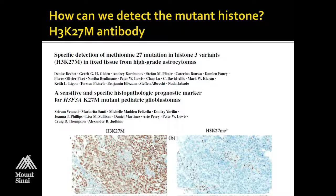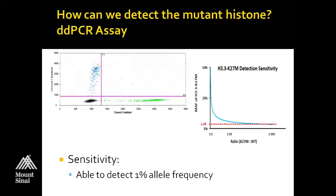There's a very nice antibody now available to the K27M. It does have potential caveats in terms of interpretation, but overall the antibody works pretty well. As a backup for cases where we're not sure, we have a digital droplet PCR assay to detect the K27M, and this would also be the way we look for G34R, because there's no antibody available for that one.